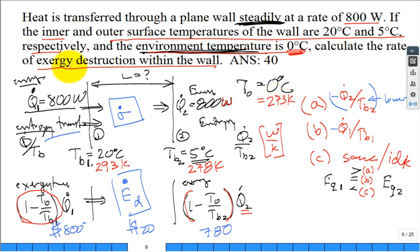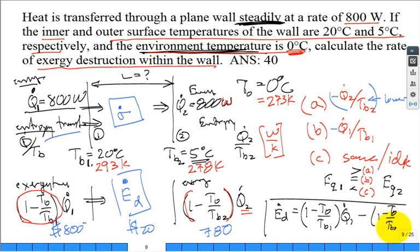Okay. So now we want to calculate that rate of exergy destruction. The exergy balance gives us that the rate of exergy destruction is the difference between what came in, 1 minus T naught divided by TB1 times Q dot 1. Isn't that the flow of exergy coming in? And then we subtract 1 minus T naught over TB2 times Q dot 2. Now, Q dot 1 and Q dot 2 are the same, 800 watts. And so you make the calculation.